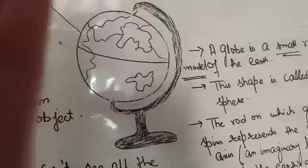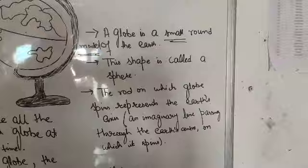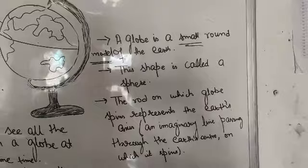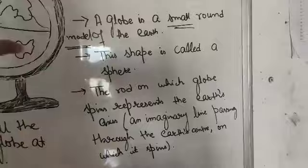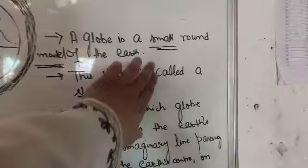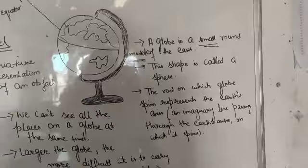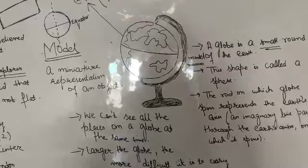Globe is the model of earth because it exactly looks like earth. From here it becomes clear that a globe is a small round model of the earth, another round shape that is known as sphere.